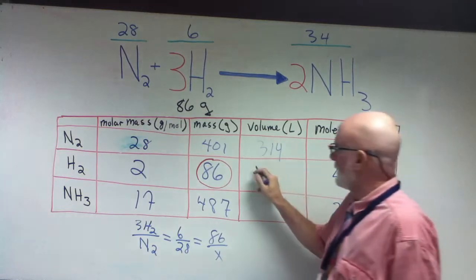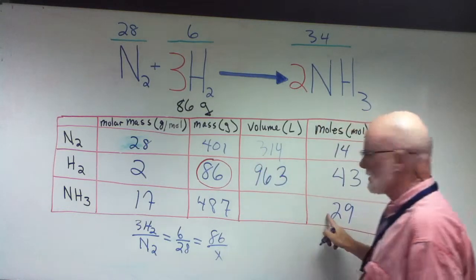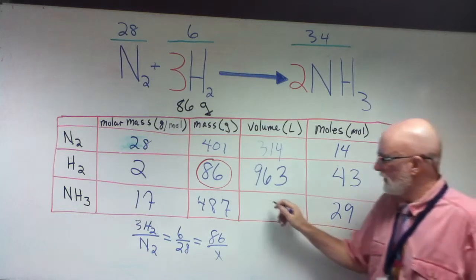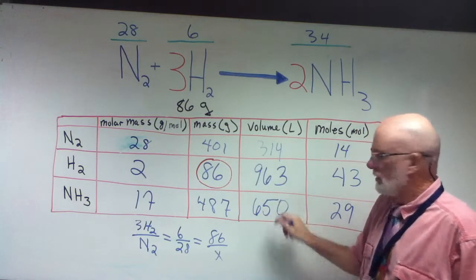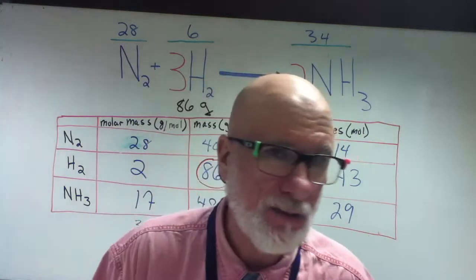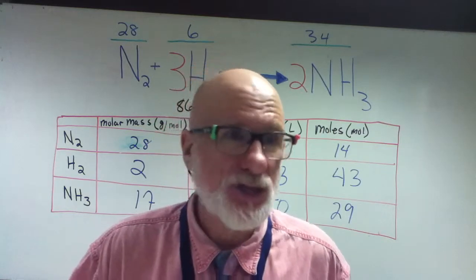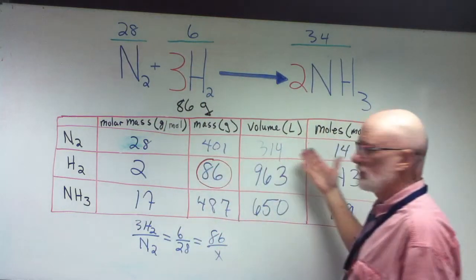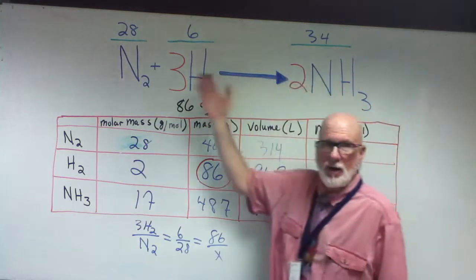963. And what's this one? 650. That's all the stoichiometry chapter is — understanding the relationship among these values in regards to this equation.